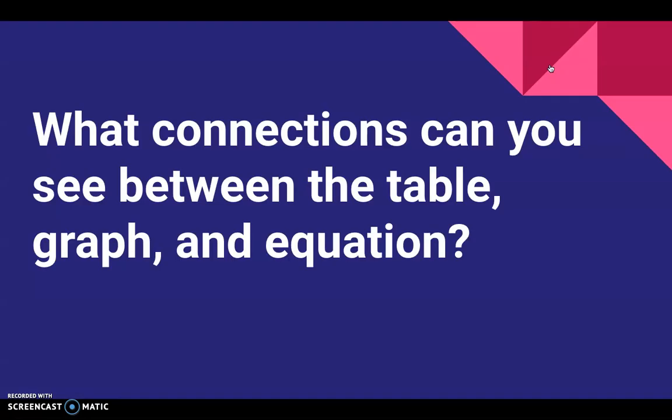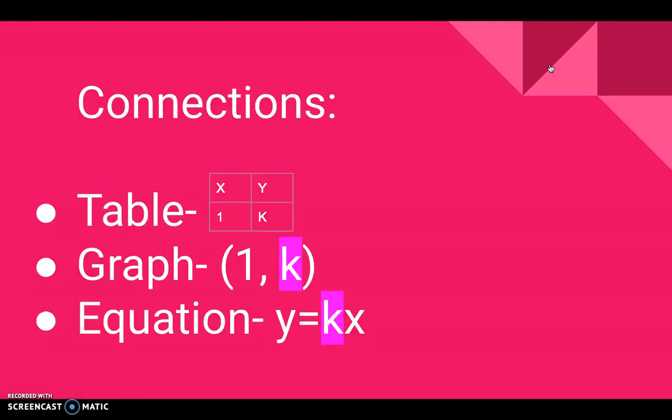Today we are going to see what connections are made between the table, the graph, and the equation. In a table when the x value equals 1, the y value is the constant of proportionality which is represented by the letter k.